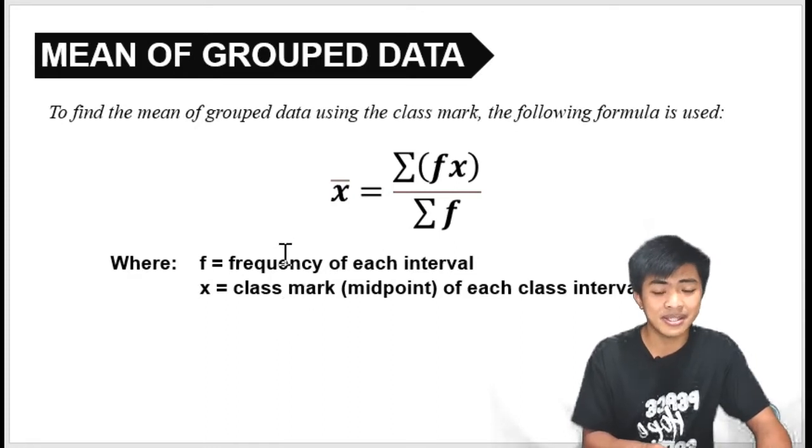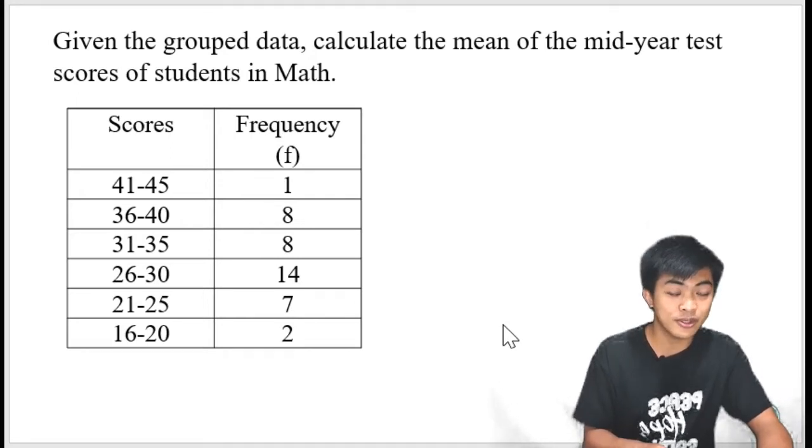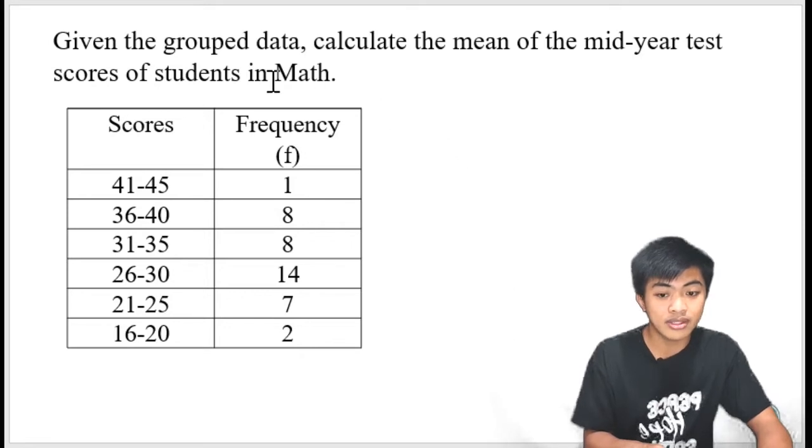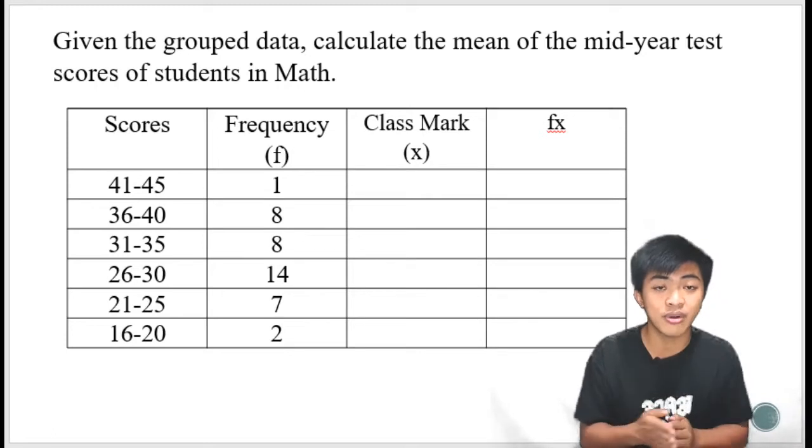So let's have an example. Given a group data, calculate the mean of the mid-year test scores of students in math. The data is presented in a frequency distribution table. And yung first step na gagawin natin is to add two columns. One column for the class mark, and one column for fx.